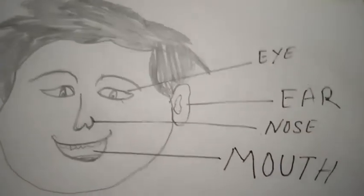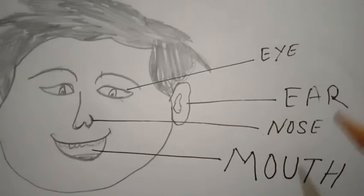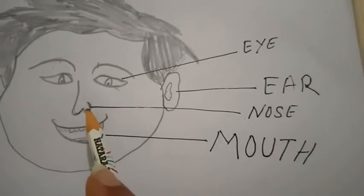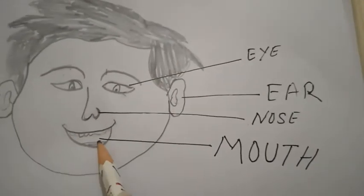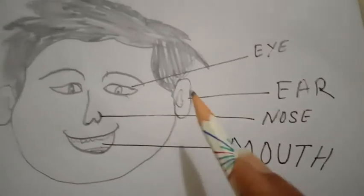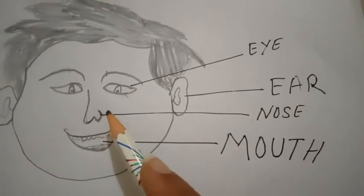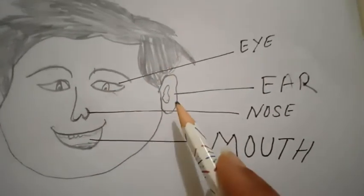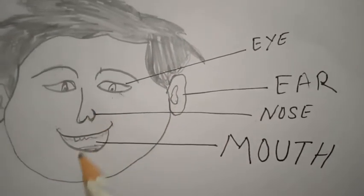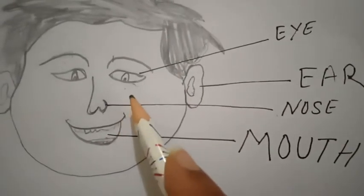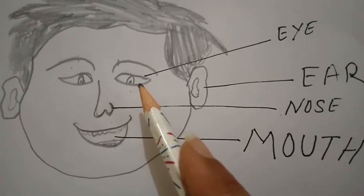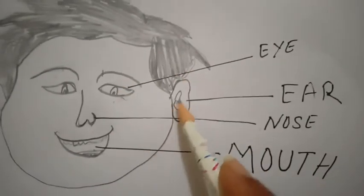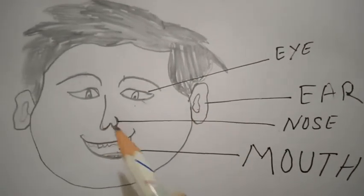So again we will speak these words. Eye, ear, nose, mouth. Again: eye, ear, nose, mouth. So these are the parts of our face — eye, ear, nose, mouth.